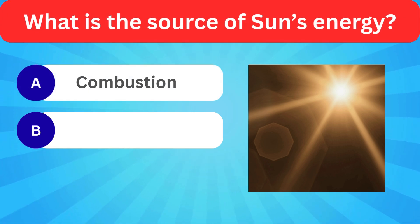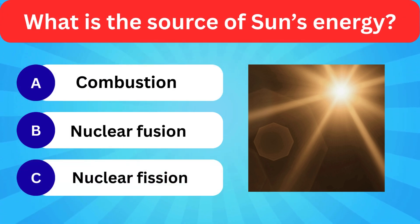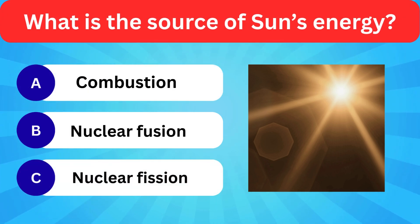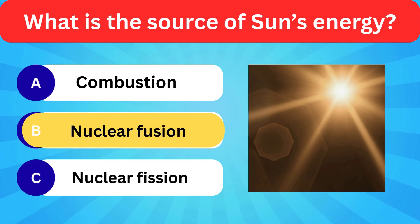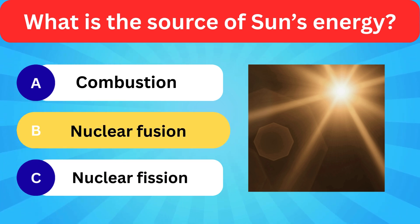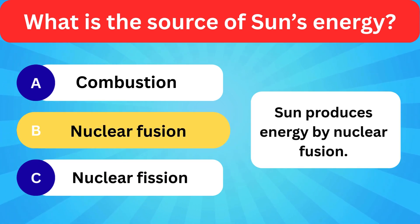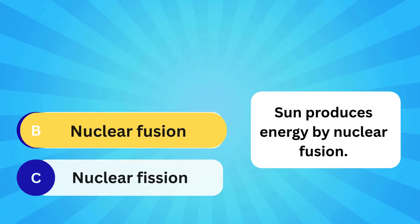What is the source of the sun's energy? Options: Combustion, Nuclear fusion, Nuclear fission. Correct answer is nuclear fusion. The sun produces energy by nuclear fusion.